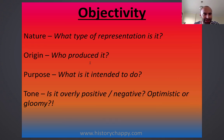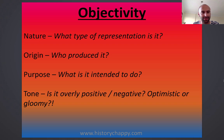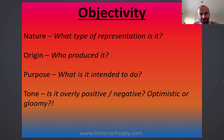To break down objectivity, we're going to use four sub-criteria. First, the nature of the representation — what type is it? Is it a diary extract, a picture, a photo, a secondary source written by a modern historian? Second, the origin — who produced it? That might have a big bearing on whether or not it's objective. If you ask me about Tottenham Hotspur, because I love Tottenham, I will tell you they're fantastic — I might be a little bit biased. Third, the purpose — what is that source intended to do? Is it intended to inform, or to make you feel a certain way, positive or negative? Finally, the tone — is it overly positive or negative, optimistic or gloomy, and are some of the words slightly over-exaggerated? So: nature, origin, purpose, and tone for objectivity.